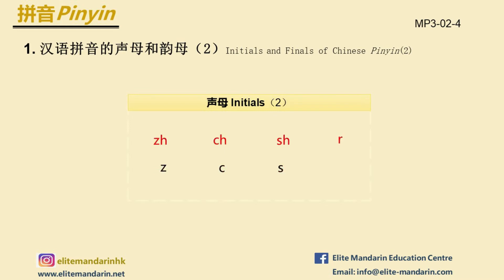Let's listen again: 知, 吃, 虚, 日, 子 (z), 自 (zi), 吃 (c), 丝 (s).